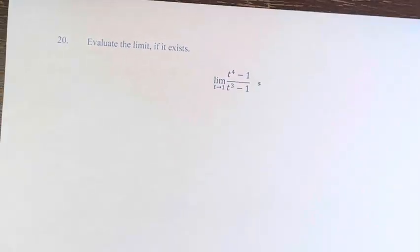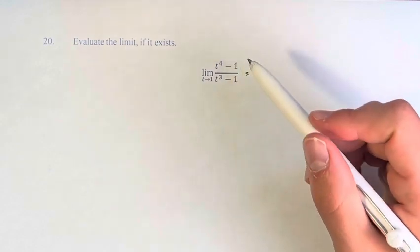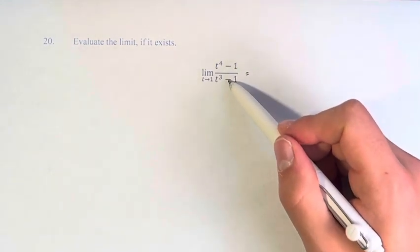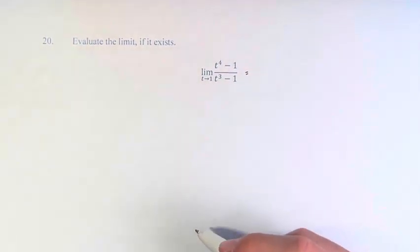So what we have to recognize here to simplify this: this is the sum of two squares and this is the difference of two squares and the difference of two cubes. And we know how to factor both of those things out.